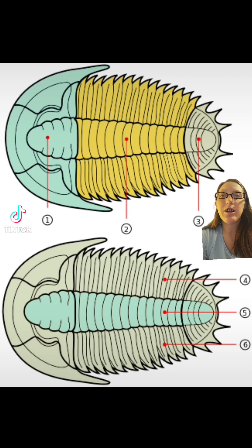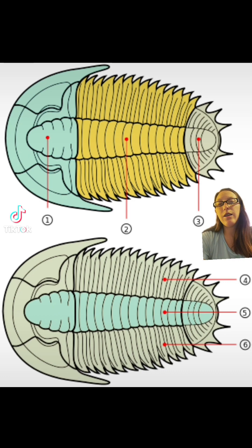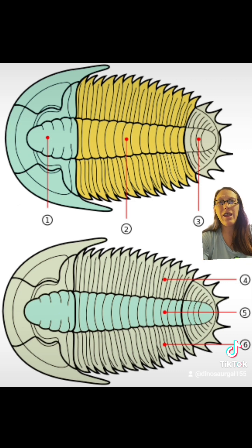This diagram here kind of shows you how they're split. Looking at the top one, the horizontal segments are: number one is the cephalon, or the head; number two is the thorax, or the abdomen; and number three is the pygidium, or the butt. And then looking at the lower part, the vertical lobes are the left and right pleural lobe and the central axial lobe. All the threes.